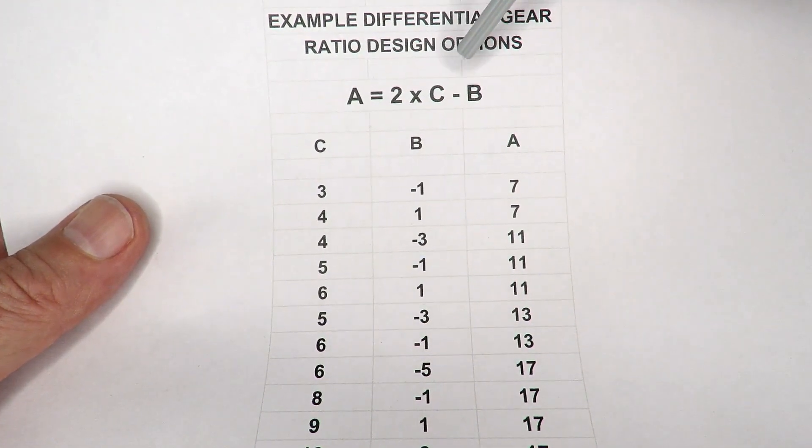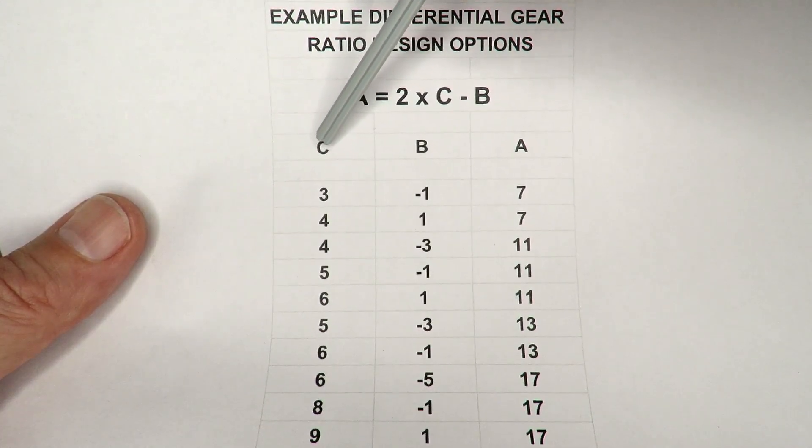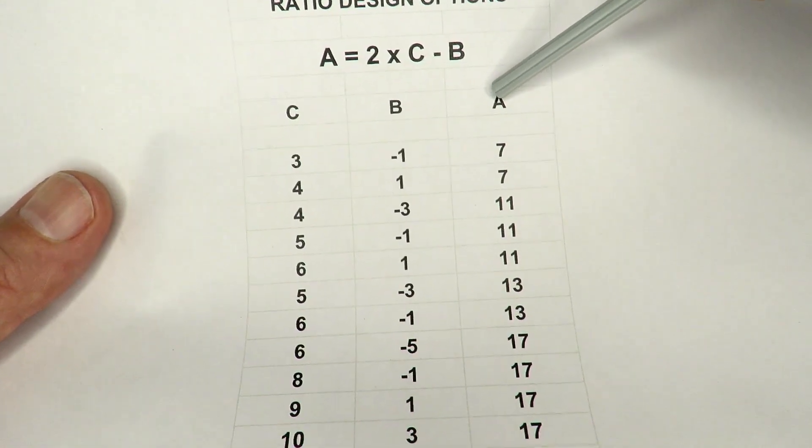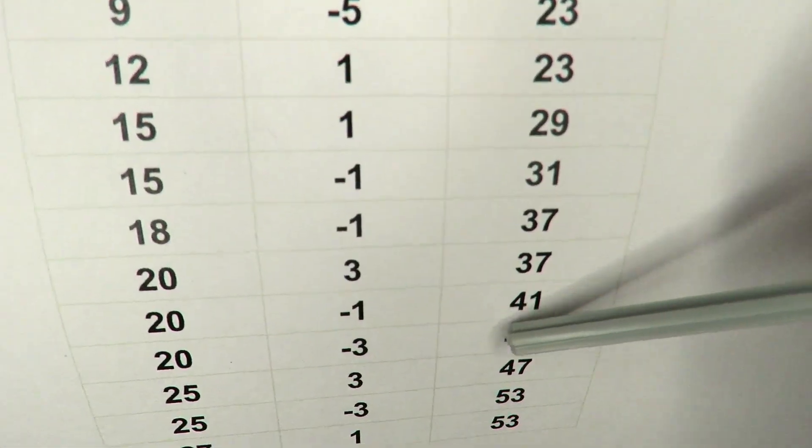Over here, we've got the equation A equals 2C minus B. This column here we've got the C column, the B column, and the output A column. As you can see here, we can create many of the different primes or pretty much any prime number that we like.